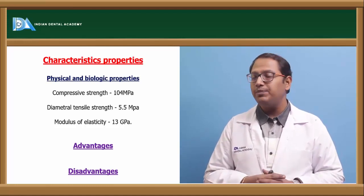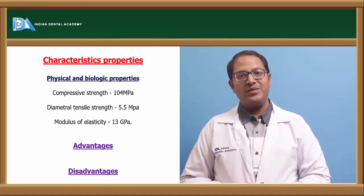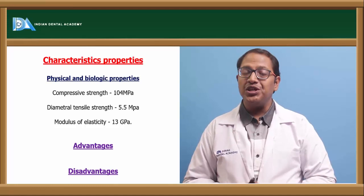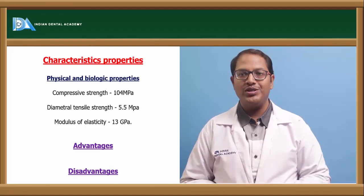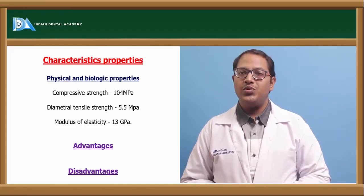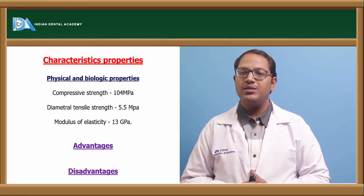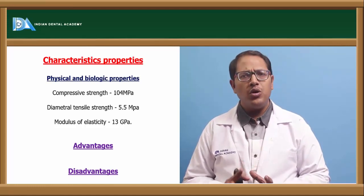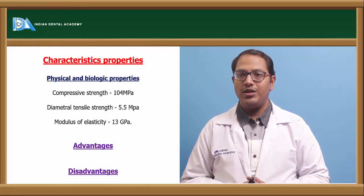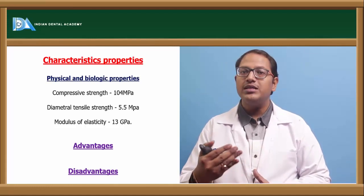The advantages of zinc phosphate cement include a long record of clinical reliability — it has been used for years and is one of the oldest cements. It is easy to use, easy to clean up, has adequate compressive strength, adjustable working time, and acceptable film thickness of approximately 25 micrometers as a luting cement.